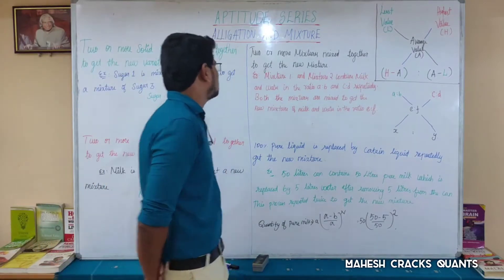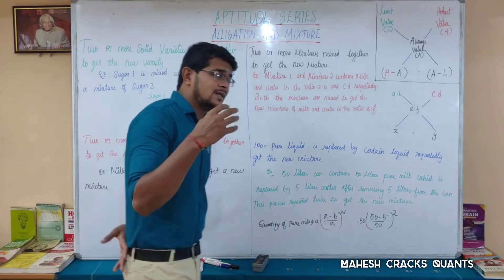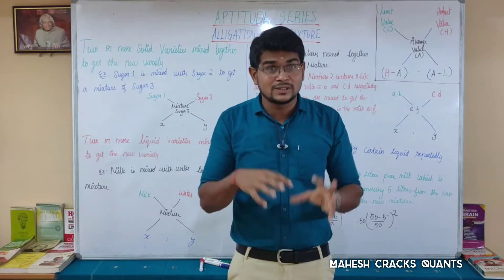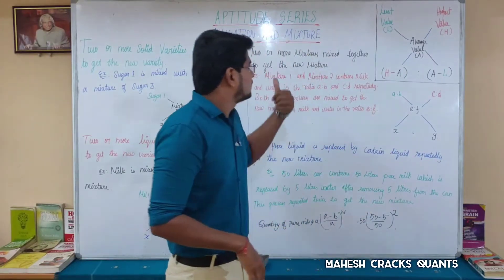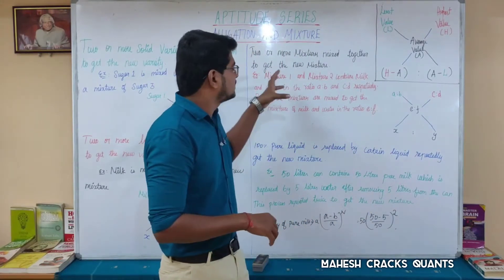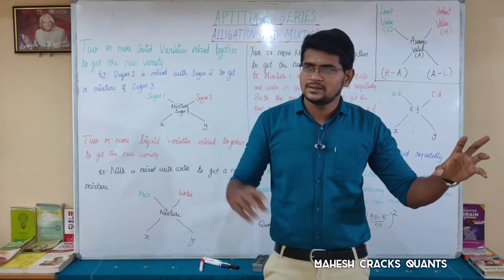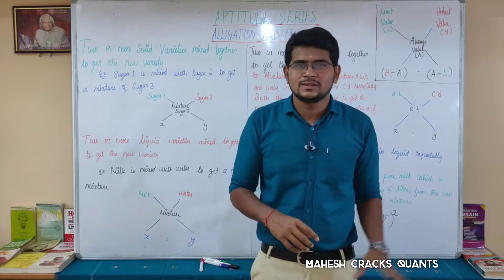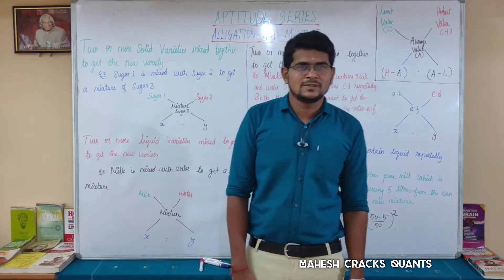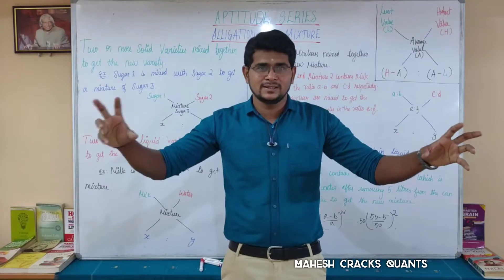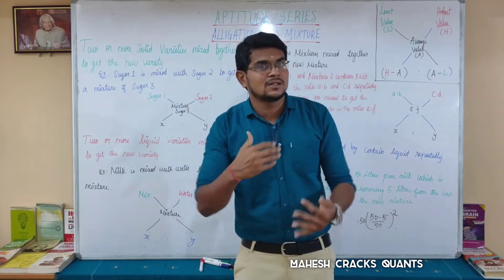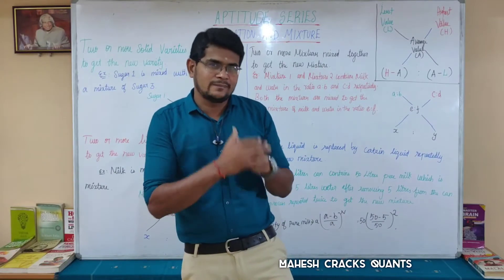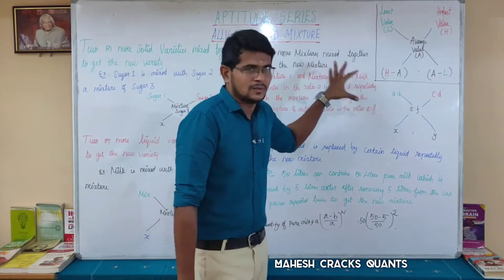Three: two or more mixers mixed together to get a new mixer. There are already mixed products — two types of products — and a third mixer is added. For example, there is a 6-unit milk mixture (Arvin milk) mixed in a certain ratio. Arvin milk is also mixed in a certain ratio. These are already mixed products, and we mix them together at different prices.